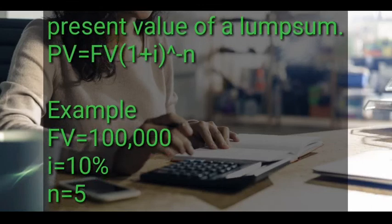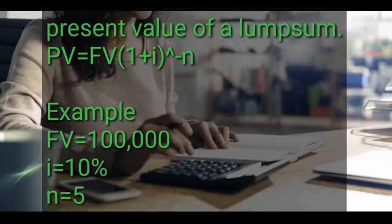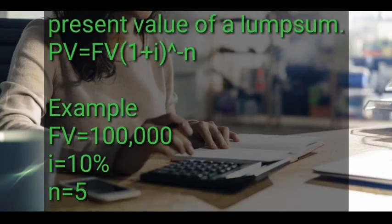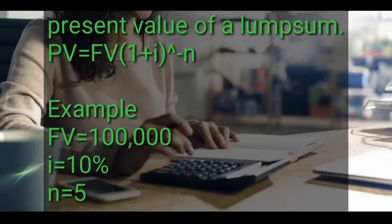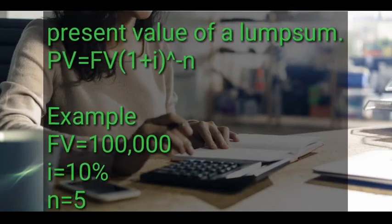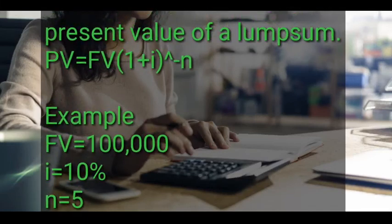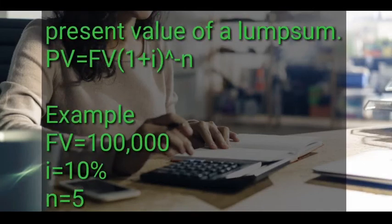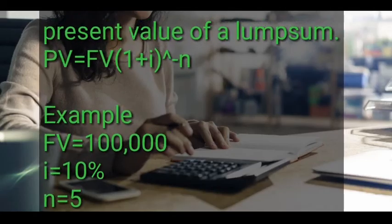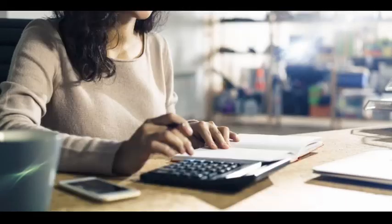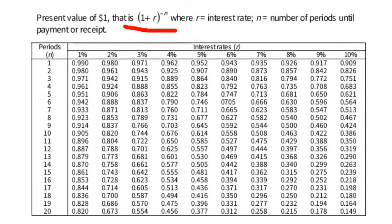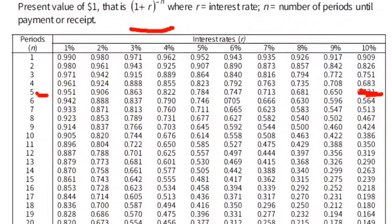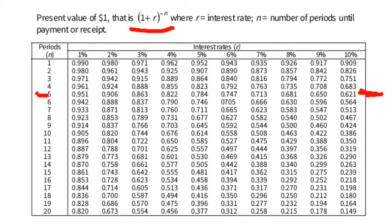For example, they've given us a future value of 100,000, an interest rate of 10%, and n equals 5 years. They want us to determine the present value of 100,000 five years from now. We are going to use the present value tables. Since it's a lump sum, we shall use the table that has the present value interest factor of a lump sum, which is (1 + r) to the power of negative n. Our interest rate is 10% and our n is 5 years.